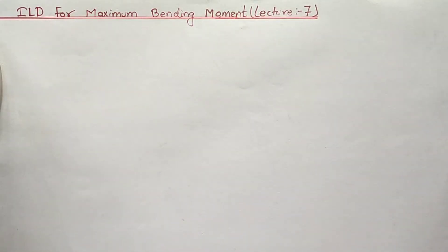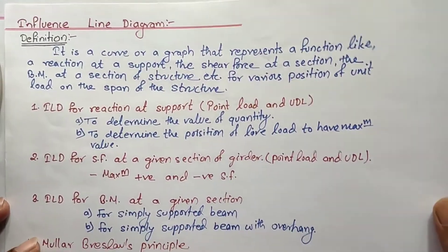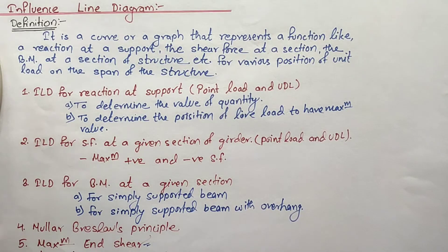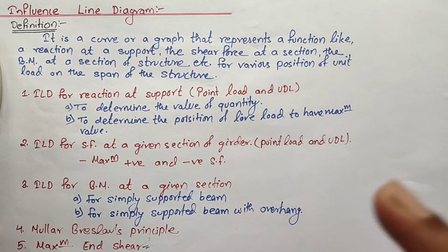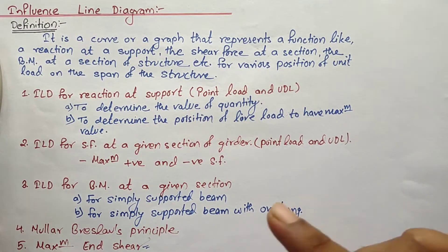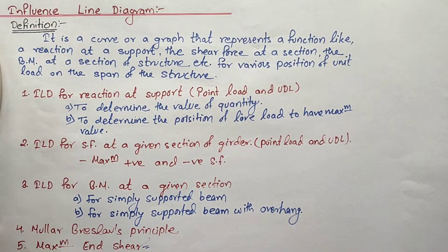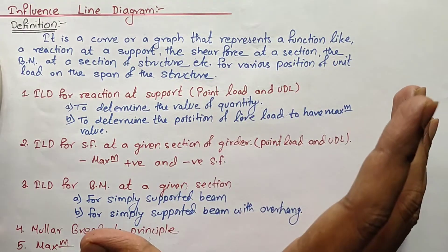Welcome back to Civil Learning Online. In the previous video we discussed how to draw the influence line diagram for the maximum bending moment using a point load. Today I'm going to discuss how to draw the influence line diagram for the maximum bending moment when we are provided with a UDL. There will be two cases: one when the UDL is longer than the span, and another when the load is shorter than the span.